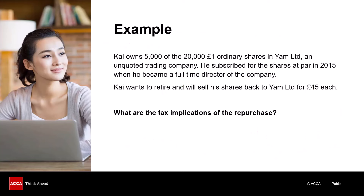Here we have Kai, who owns 5,000 of the 20,000 shares in Yam Limited, which is an unquoted trading company. He subscribed for the shares at par, which means that if these are £1 ordinary shares he will have paid £5,000 for those shares. He wants to retire and will sell his shares back to the company for £45 each, and we need to think about the tax implications.